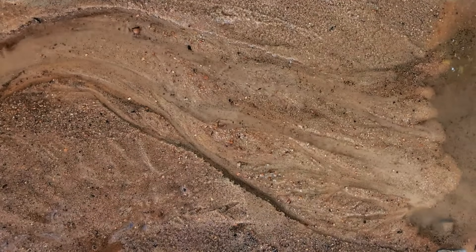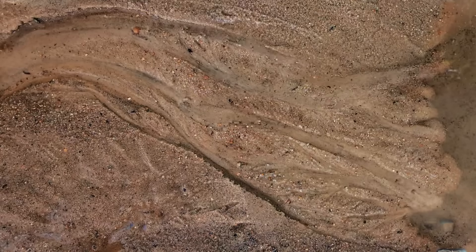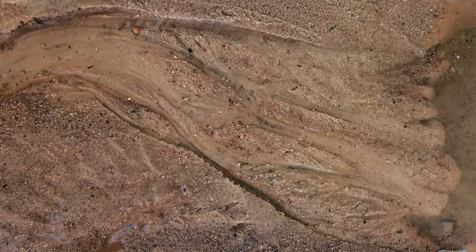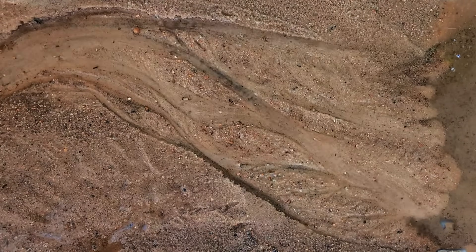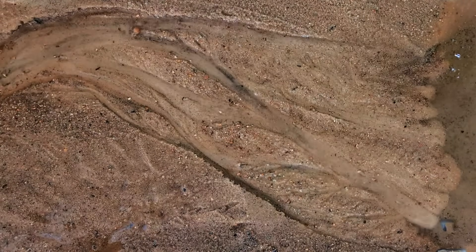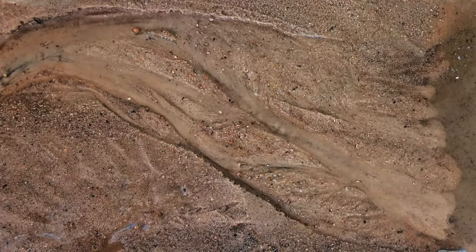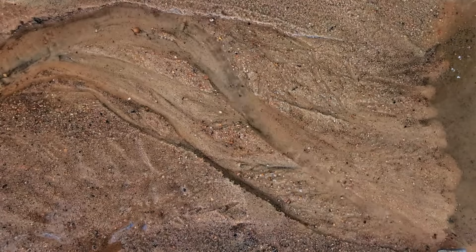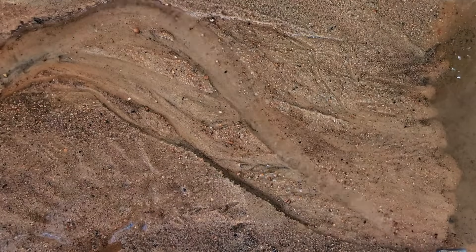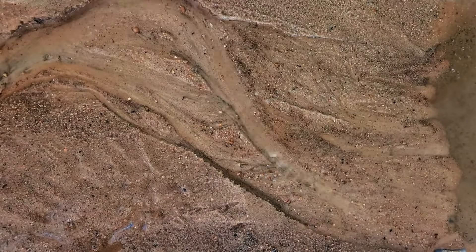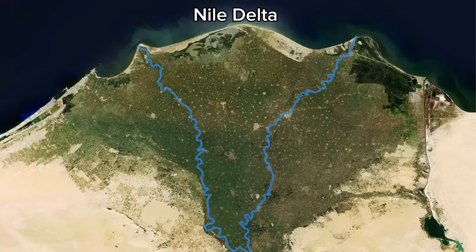As the braided river reaches a larger body of water, like a sea or a lake, it slows down even more and drops even more sediment. This sediment spreads out, forming new land called a delta. Imagine a delta like a big fan or a triangle made of all that sediment.